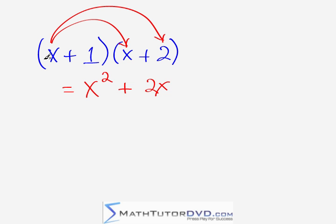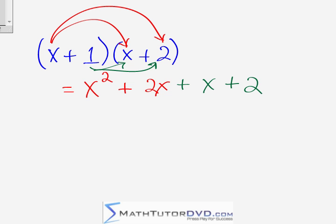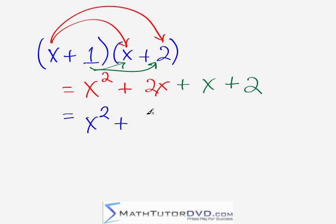Now we have to multiply the 1. We're going to multiply 1 times x, giving us x. And then 1 times 2 gives us 2. We have not used FOIL at all. The first term x times x gives us x squared, then x times the other term gives you 2x, then 1 times x gives us x, and 1 times 2 gives you 2. You can simplify further: x squared stays by itself, 2x plus x gives you 3x because these are like terms, and the 2 stays along for the ride. So the answer is x squared plus 3x plus 2.